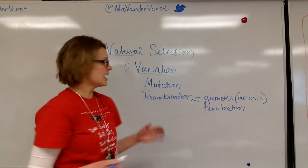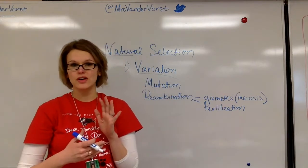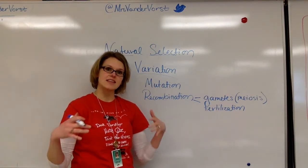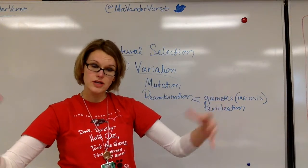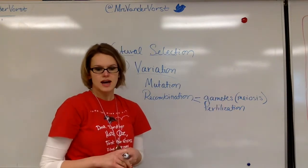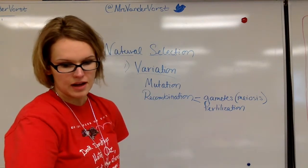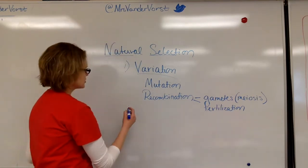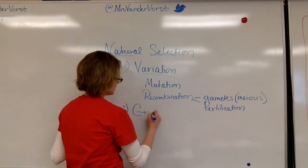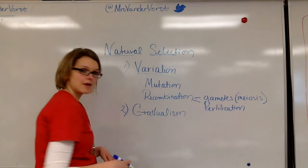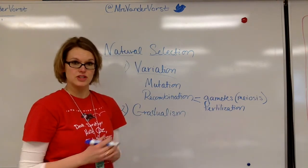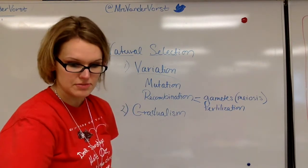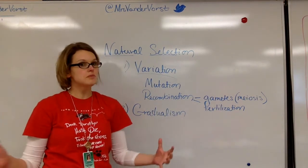Mutation is something that goes wrong. A lot of times mutations are harmless — like having an extra finger — it will not harm you. Sometimes they are beneficial, and in those cases they will hopefully allow the organism to survive longer so it can pass on those traits, and the mutation will carry on and perhaps even become commonplace. One more thing that's really important about natural selection is something we call gradualism. If something happens gradually, it happens slowly over time. Evolution does not happen overnight — it happens slowly over thousands and millions of years, especially when we are talking about complex organisms.